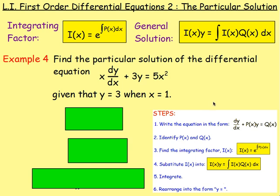Let's go with this example. Examples 1 to 3 are in the first lesson. Find the particular solution of the differential equation x dy by dx plus 3y equals 5x squared, given that y equals 3 when x equals 1. Now, the first thing we need to do is make sure the equation is of that form.